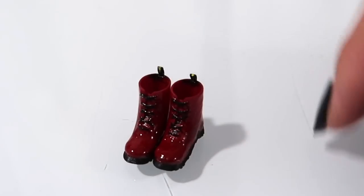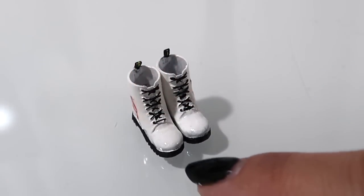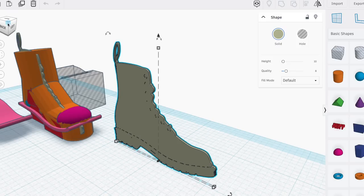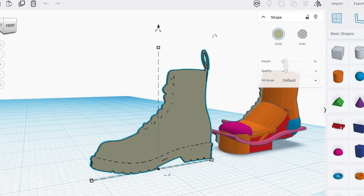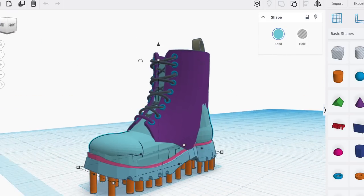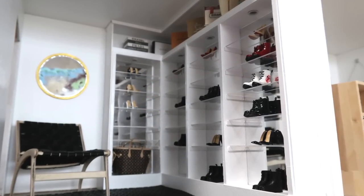If you're curious about the Doc Martens in this closet, I made them using the same method as the high heels by combining a bunch of different basic shapes together. Again, it's a time consuming process but you only need to design it once and then you can print thousands of copies. I think both pair of shoes took me about a week to complete, so really be patient.